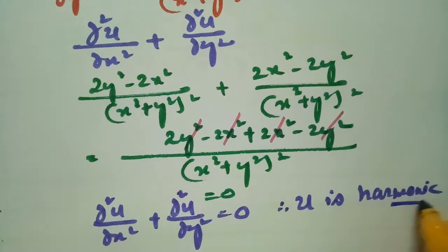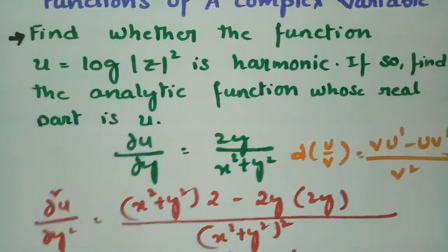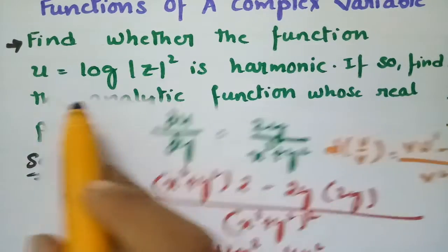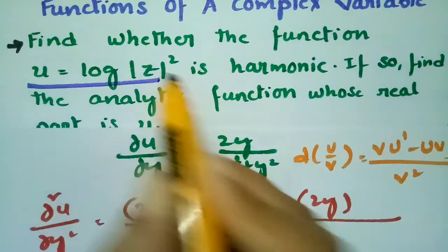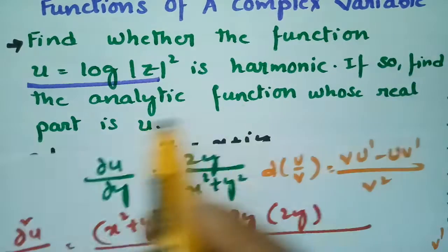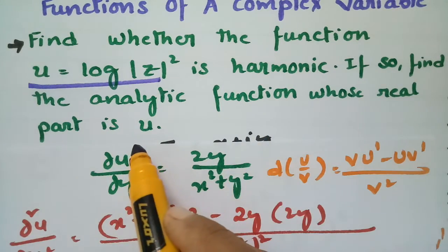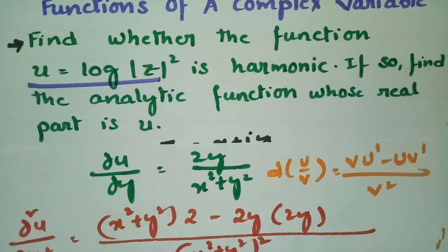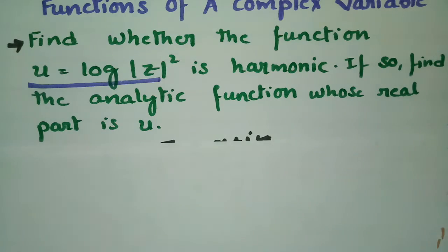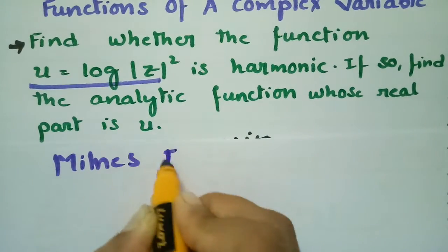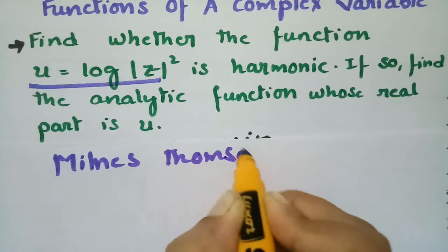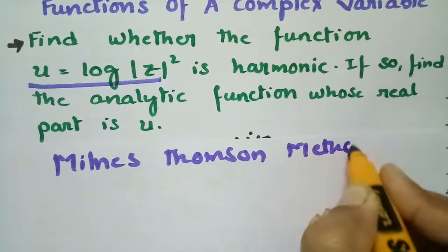So we have determined that u is harmonic — the first part is complete. Now we have to find the analytic function whose real part is u. For finding the analytic function we use the Milne-Thomson method.